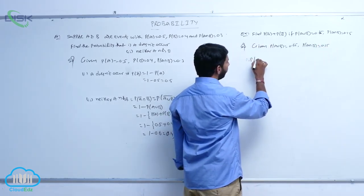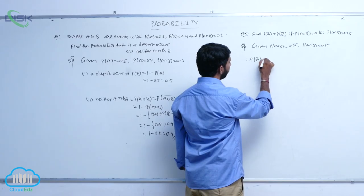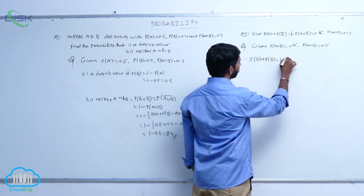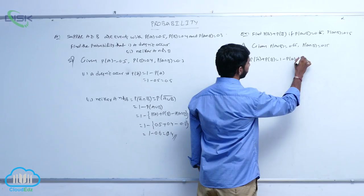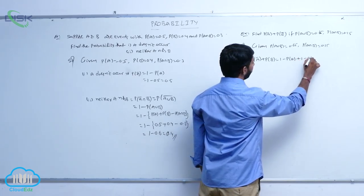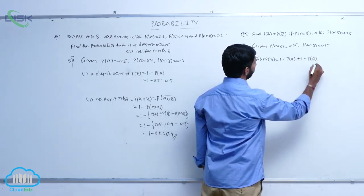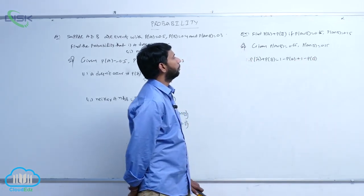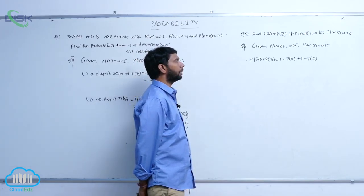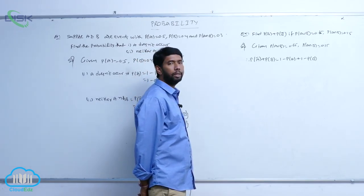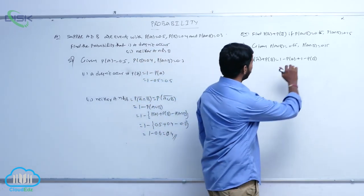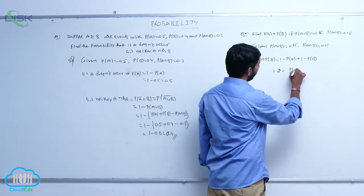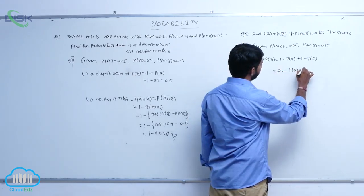Therefore, P of A bar plus P of B bar can be written as 1 minus P of A plus 1 minus P of B, which equals 2 minus of P of A plus P of B.